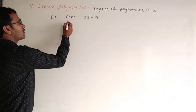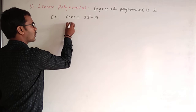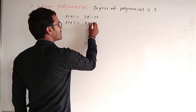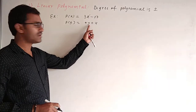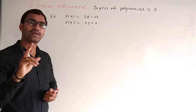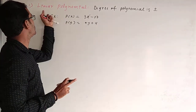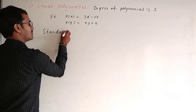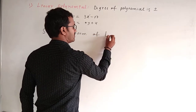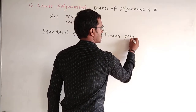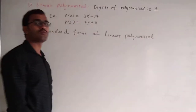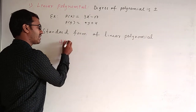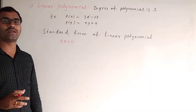Another example of a linear polynomial: P(y) = 4y − 4. Here the variable y has degree 1. So the degree of the polynomial is 1, making it a linear polynomial.